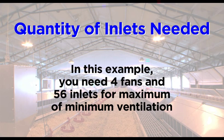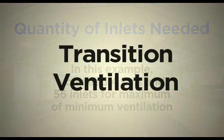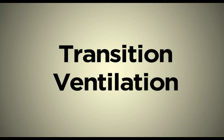You need to spec inlets 25% higher to prevent inlets from ever reaching 100% of capacity. 45 inlets times 125% equals 56 inlets. For minimum ventilation, these will be lighter weighted inlets. In this example, you need 4 fans and 56 inlets for this house for maximum of minimum ventilation.